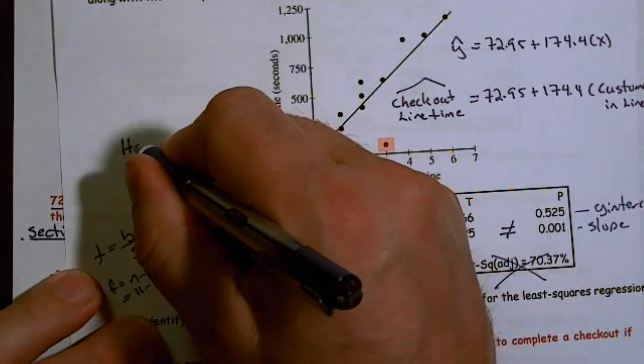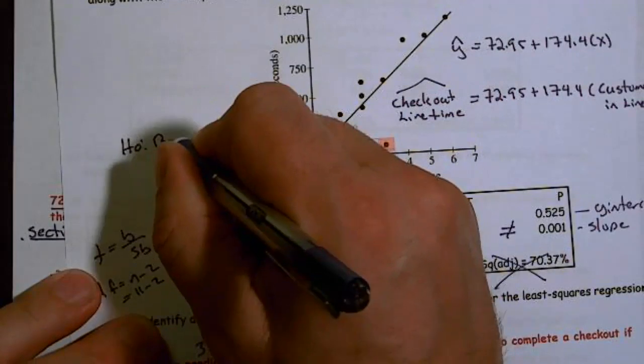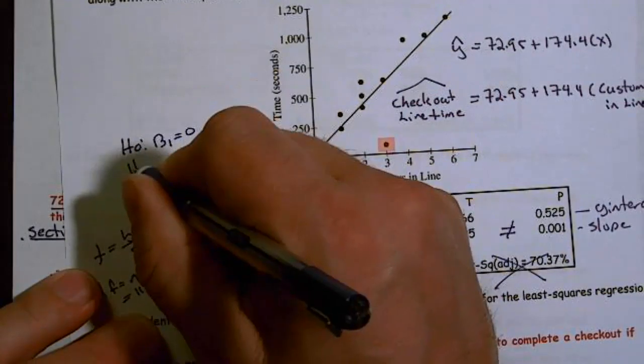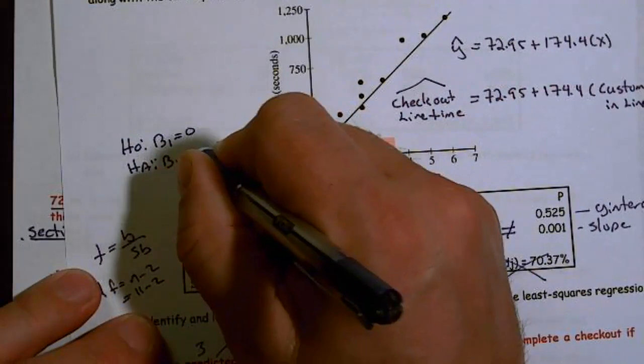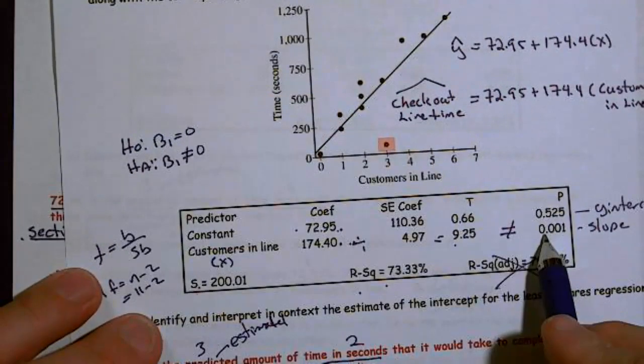HA, beta 1 does not equal 0. So this is a two-tailed test. And remember, beta 1 equals 0 means there's not a linear relationship, and this means there is a linear relationship.